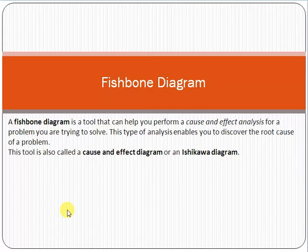Let's start. The fishbone diagram is basically a diagram, and we also call it the cause and effect diagram or the Ishikawa diagram. One of its names is the cause and effect diagram, and the Ishikawa diagram as well. We call it the fishbone diagram because the shape of the diagram is very similar to the shape of a fish.